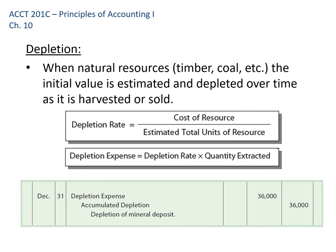The last topic in this section is depletion, which applies to owning natural resources — for example, a timber stand or a coal mine. You take the total cost of the resource, which includes getting a road in, developing it, and any costs associated with reclaiming the site and restoring it to its original state. All costs of the resource are divided by the estimated units you'll extract — cubic feet of lumber or tons of coal. Each period, you track how much you pulled out and debit depletion expense, crediting either accumulated depletion or the asset directly.